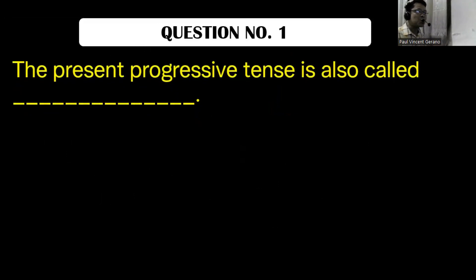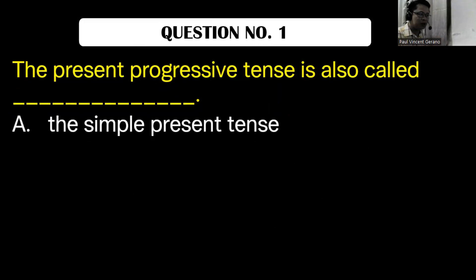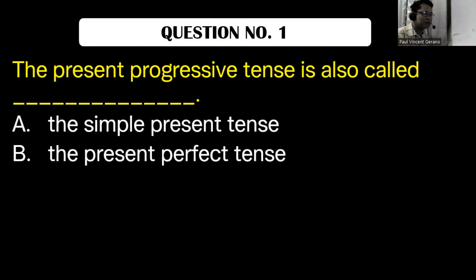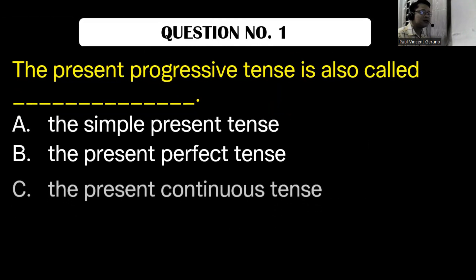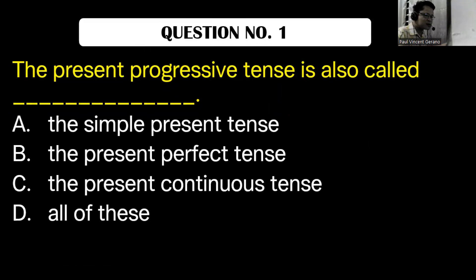Question number one. The present progressive tense is also called blank. A, the simple present tense. B, the present perfect tense. C, the present continuous tense. D, all of these. E, none of these.